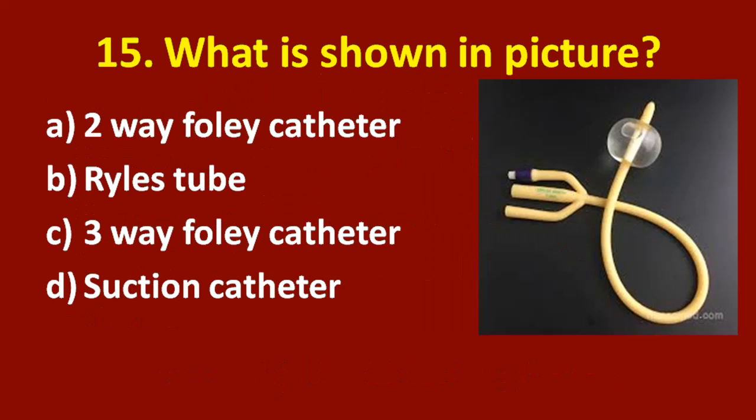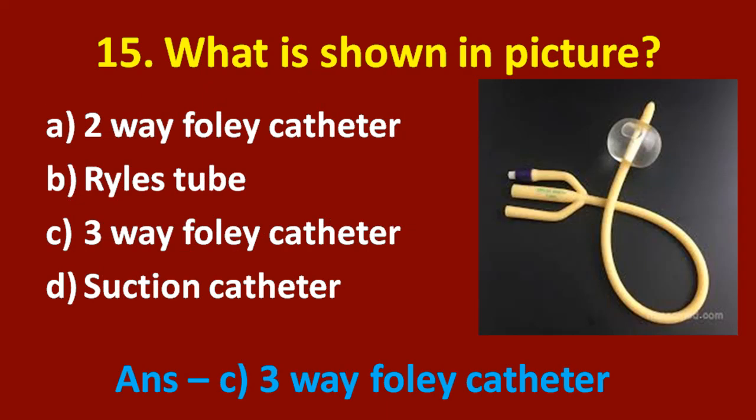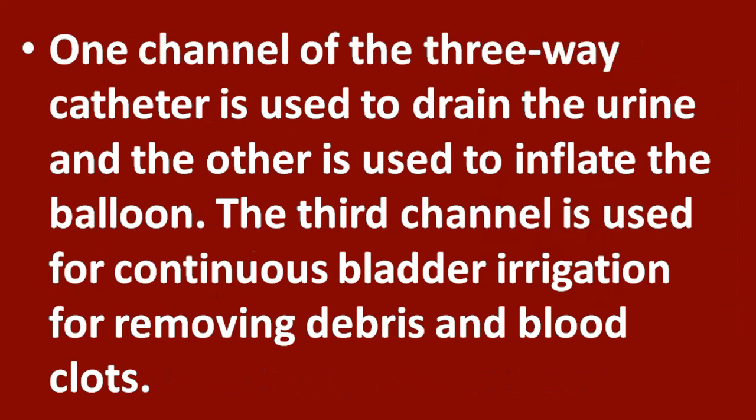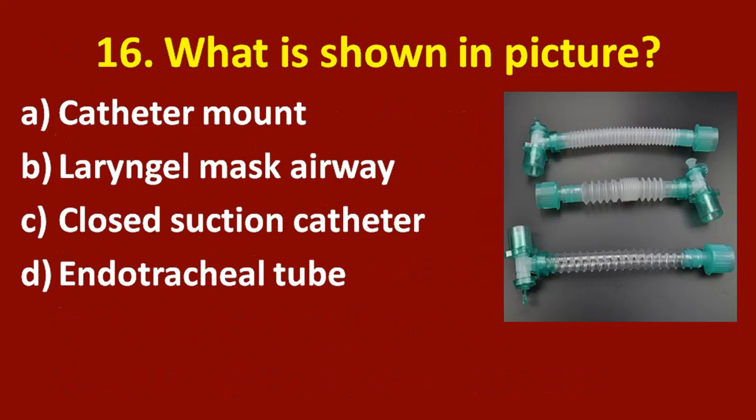Fifteenth question: what is shown in this picture? Option A: two-way Foley catheter. Option B: Ryle's tube. Option C: three-way Foley catheter. Option D: suction catheter. The correct answer is option C, three-way Foley catheter. One channel drains the urine, one inflates the balloon, and the third channel is used for continuous bladder irrigation to remove debris and blood clots.